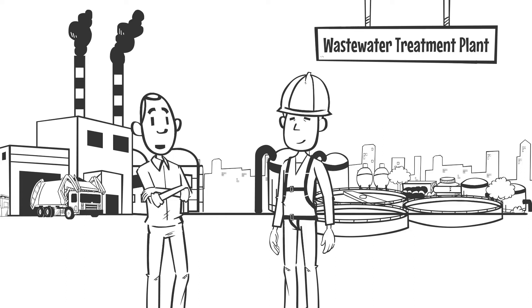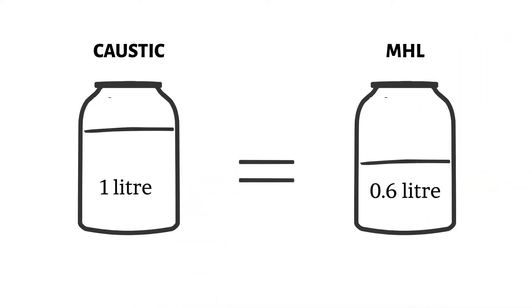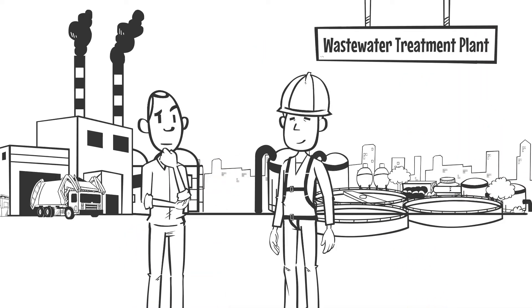So tell me Ralph, does ActiMag magnesium hydroxide have more neutralization power than caustic? Yeah, well it is interesting. 600 mils of ActiMag is equivalent to one liter of 50% caustic, so that would make it a strong alkali.